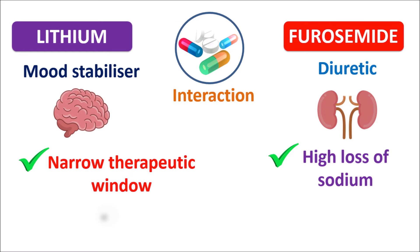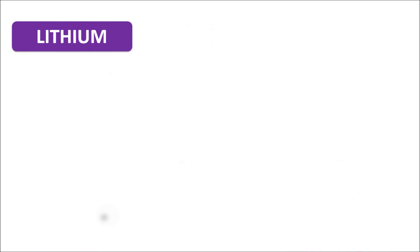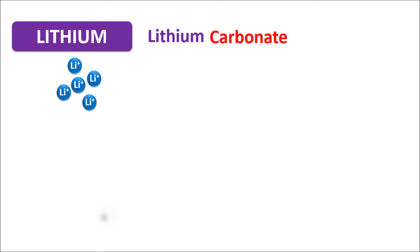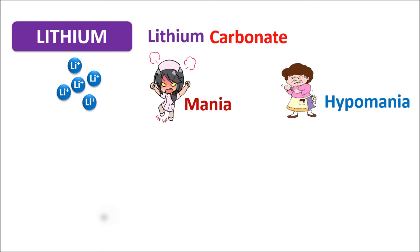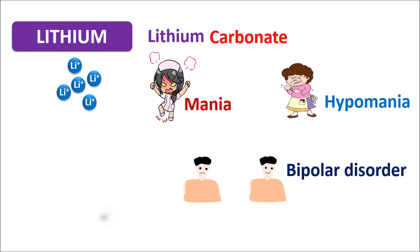Lithium is the smallest ion that can be used as a drug, available as lithium carbonate as a standard dosage form. It is used in conditions like mania, where hyperexcitability can be reduced, and in hypomania, a similar condition with lower severity. It is also used in the treatment of bipolar disorder — a mental disorder where mood swings between mania and depression — and lithium can control the manic phase.